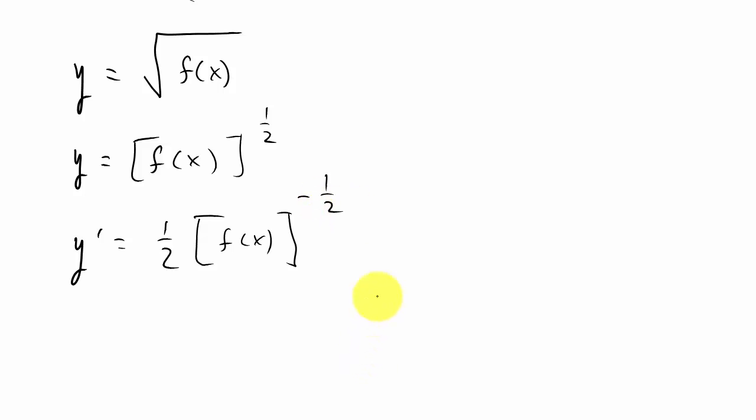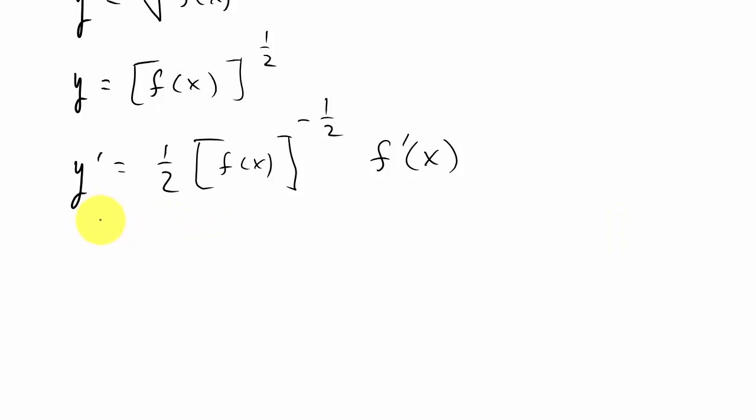...and then remember what you do when you're doing the chain rule, it's times the derivative of what's inside the parentheses, so times the derivative of f(x). Now let's look at this: y prime is equal to f(x) to the negative one-half times f prime of x all that over 2.